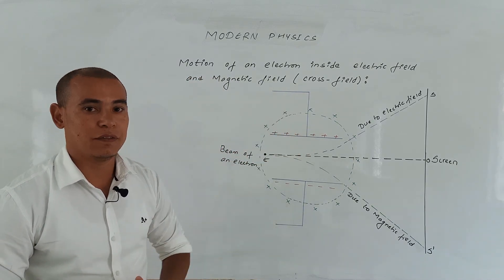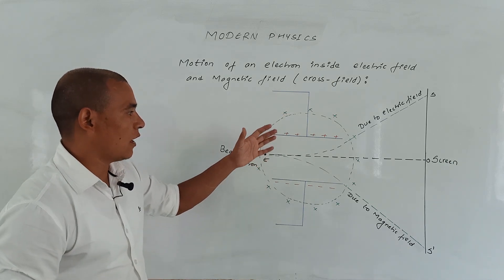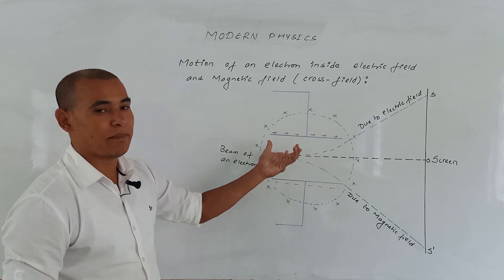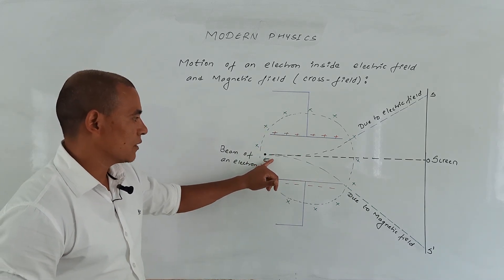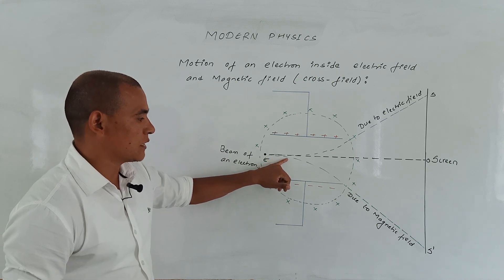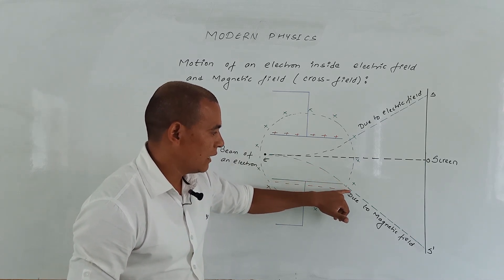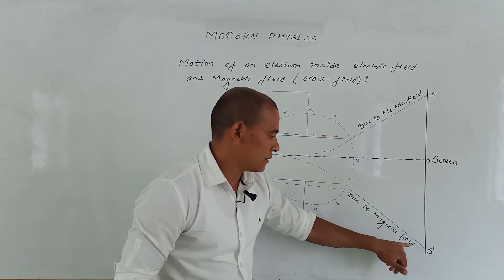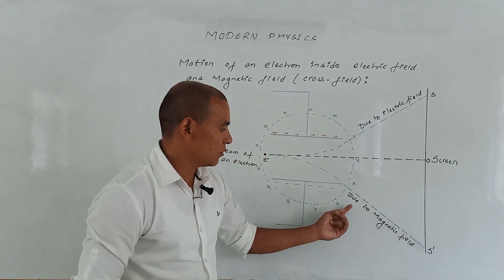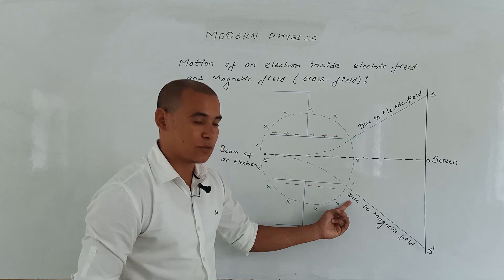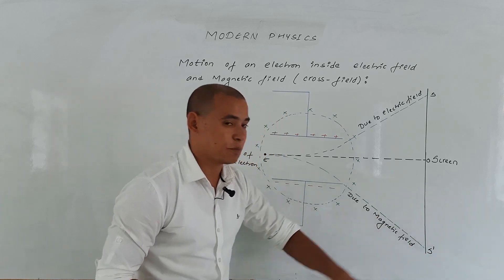At the screen, sulfur phosphorus is placed and it produces a spark. When the electric field is switched off and only the magnetic field is switched on, the electron beam moves inside the magnetic field following a circular path and strikes at position S dash on the screen, also producing a spark.